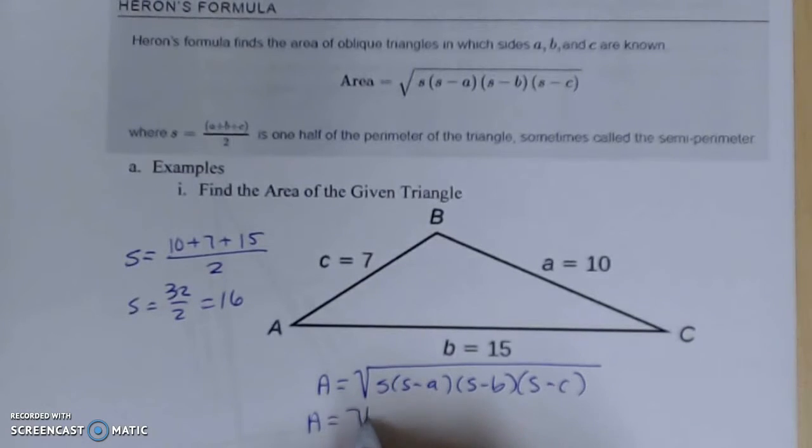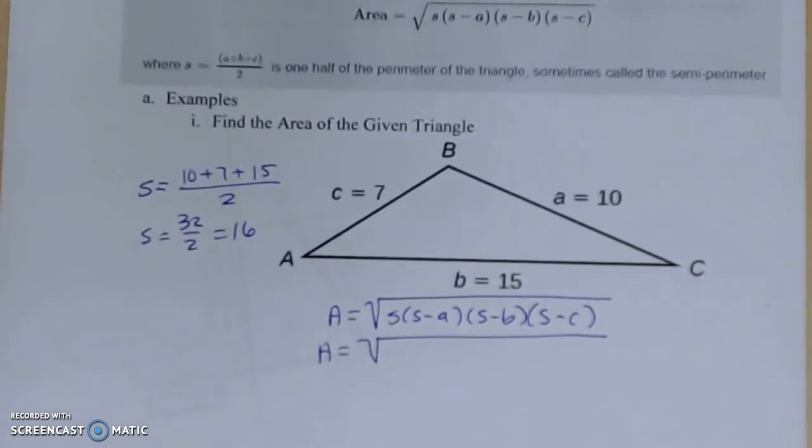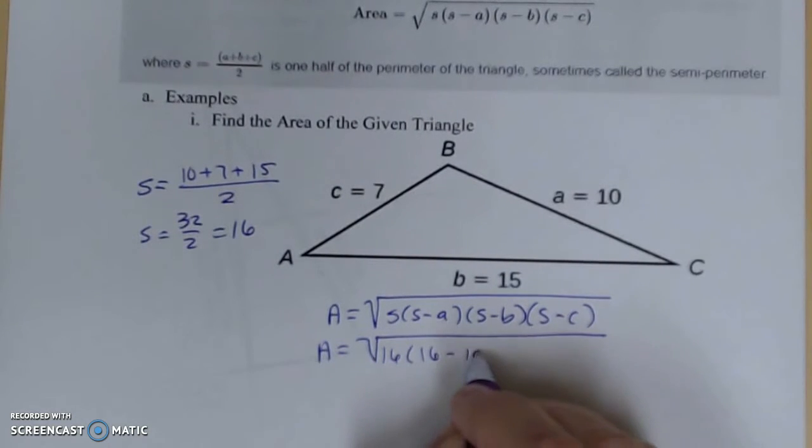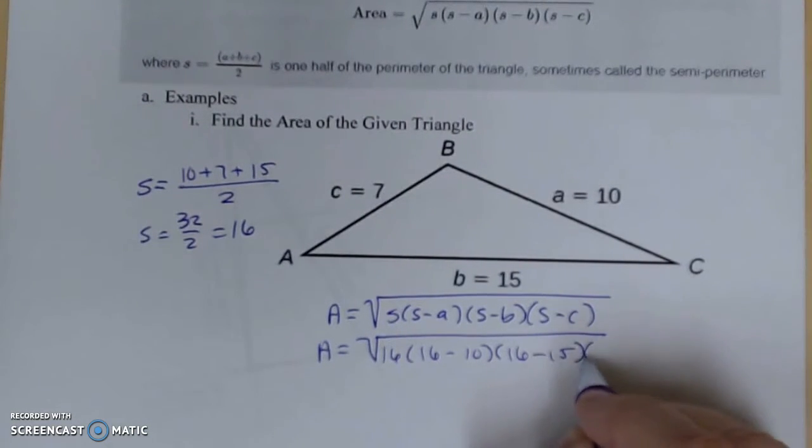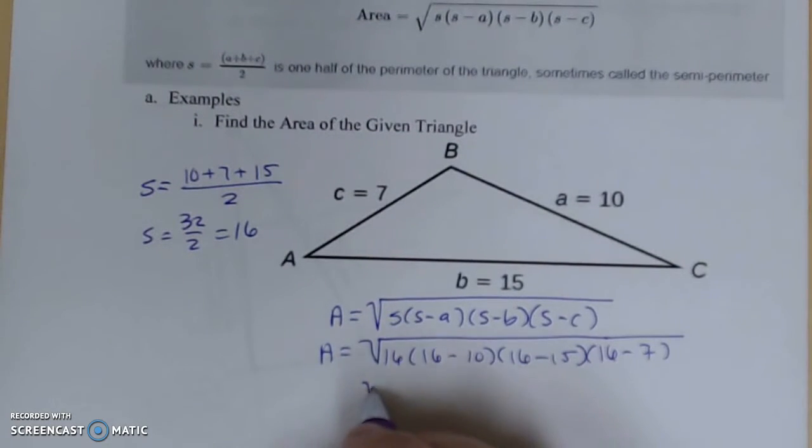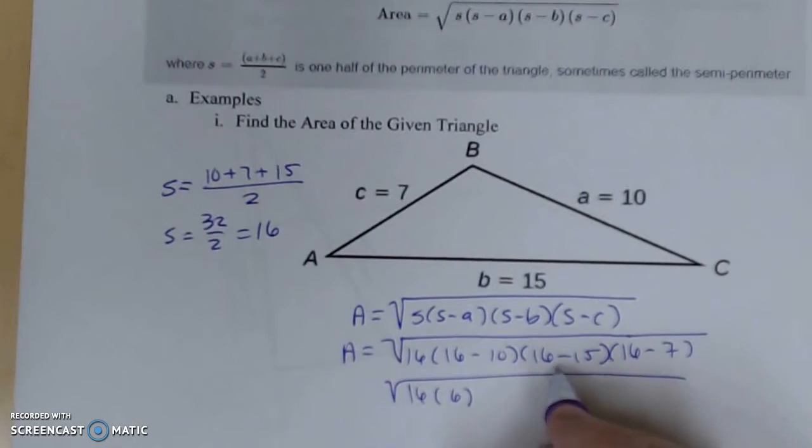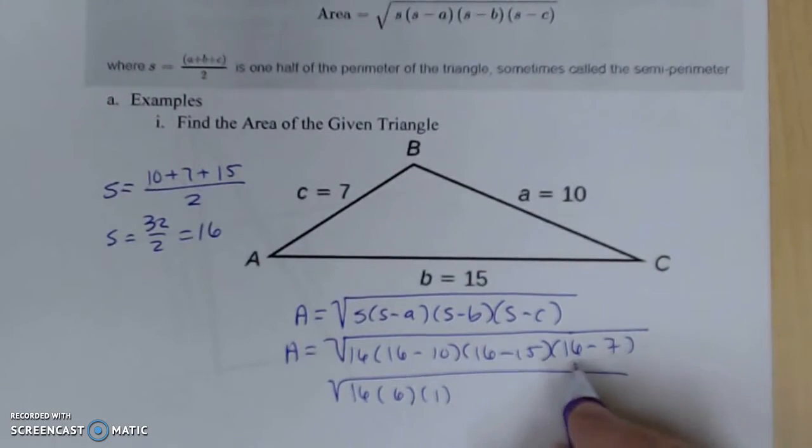Now I have enough information to fill in this formula. So square root of 16 times 16 minus 10, times 16 minus 15, times 16 minus 7. That gives me 16 times 6 times 1 times 9.